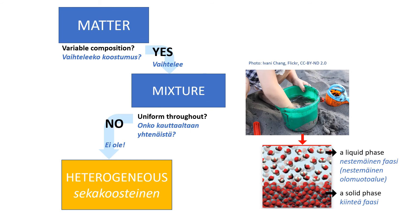A heterogeneous mixture — heterogeeninen seos — is a mixture in which the composition is not uniform throughout the mixture. If a mixture can be seen to contain two or more distinct components, it is considered heterogeneous. A heterogeneous mixture can consist of multiple states of matter. Wet sand is a good example — it does not have the same appearance throughout, and you can see the individual components and separate them physically.